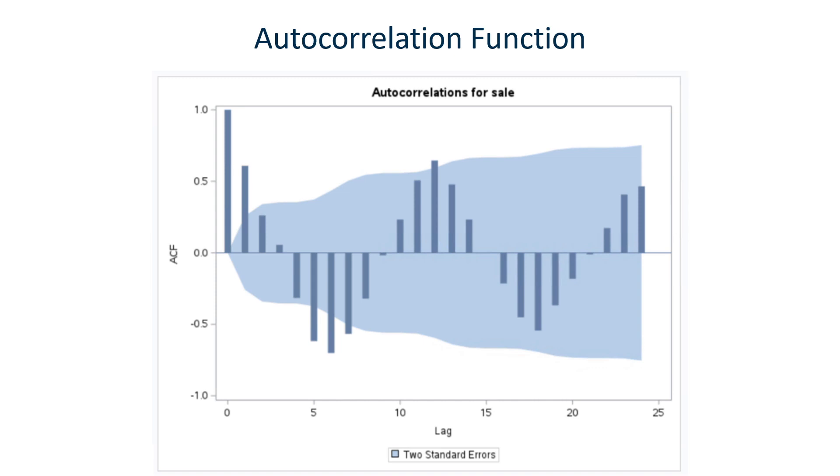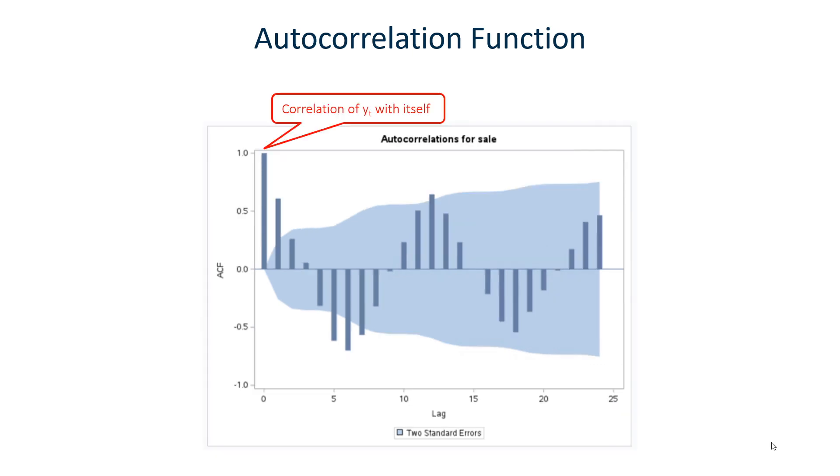We notice we have a series of bars here in a shaded blue area. The shaded blue area is two standard errors. So we're going to be most interested in those bars that stick out beyond that shaded blue area of two standard errors. The first block is a correlation of Yt with itself. So the observation at time t is obviously always going to be 100% correlated with itself. So we have an autocorrelation function of 1. The next bar we see is at lag time 1. So we see a correlation of Yt with Yt minus 1. That's the observation at the current time with the observation at the time before.